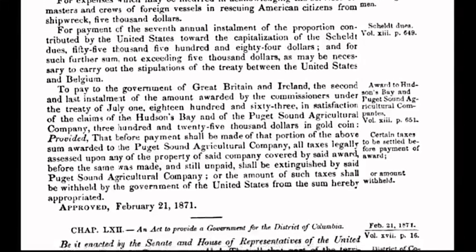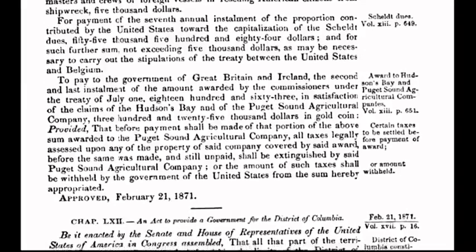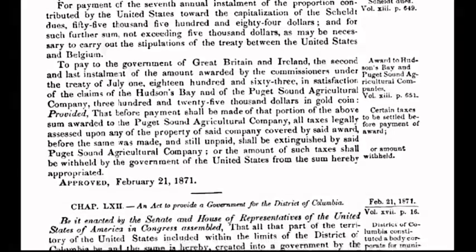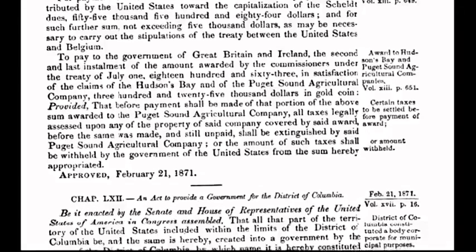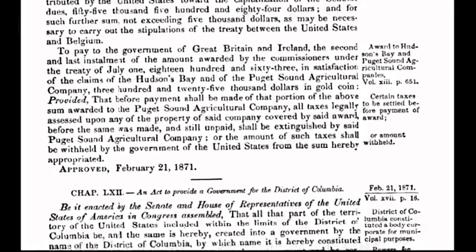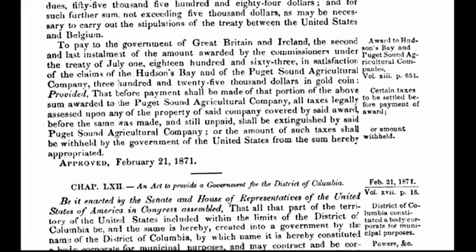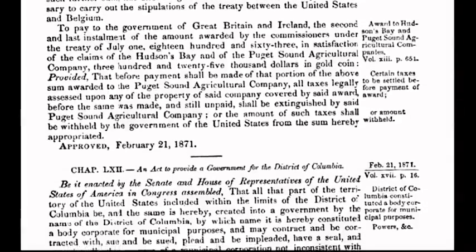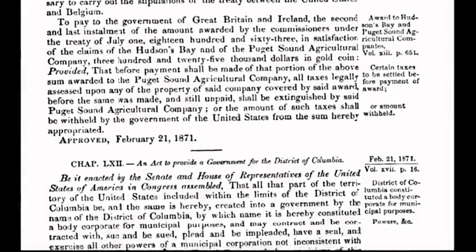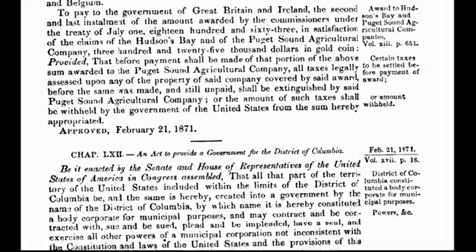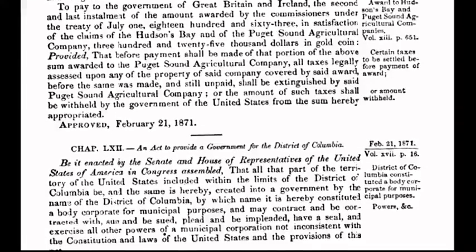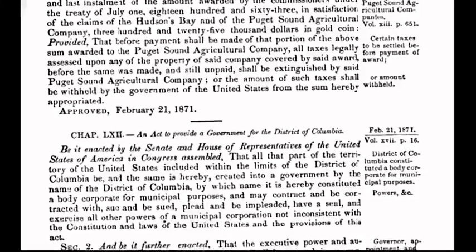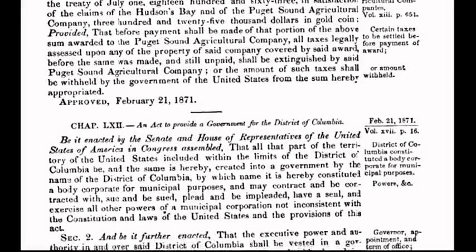With no constitutional authority to do so, Congress creates a separate form of government for the District of Columbia, a 10-mile-square parcel of land. The act was passed when the country was weakened and financially depleted in the aftermath of the Civil War. It was at that time a strategic move by foreign interests — international bankers — who were intent upon gaining a stranglehold on the coffers and neck of America. Congress cut a deal with the international bankers, specifically the Rothschilds of London, to incur a debt to said bankers.